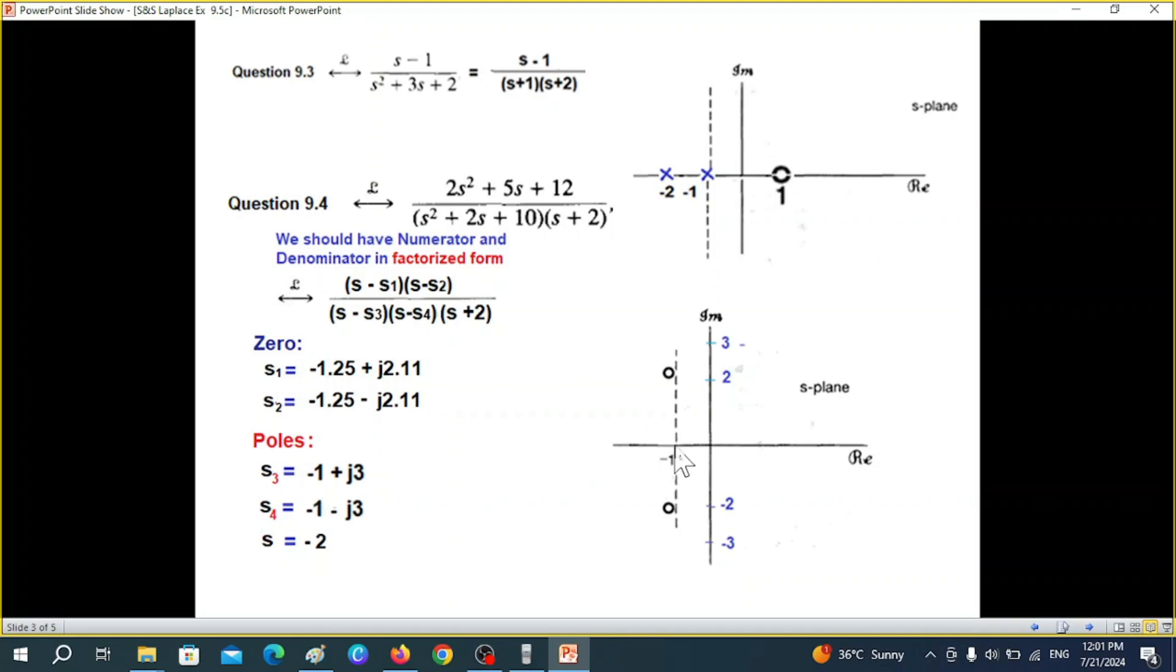Minus 1 and plus j3 so it will go up to this point. Second one is minus 1 minus j3 and the third one is minus 2. So for pole we have used the cross and for zeros we have used o.